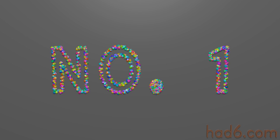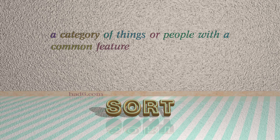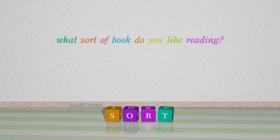Number 1: Sort. Which means a category of things or people with a common feature. For example: What sort of book do you like reading?